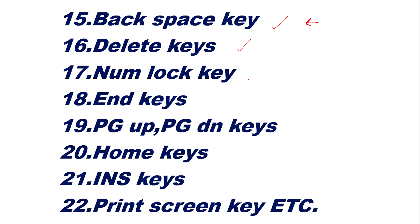Num Lock key — when the Num Lock key is pressed, all the number keys on the numeric keypad become enabled. If you press it again to turn it off, all those keys become disabled. The Num Lock status is generally indicated by a light — if the light is on, it is unlocked and will type; otherwise it is locked.